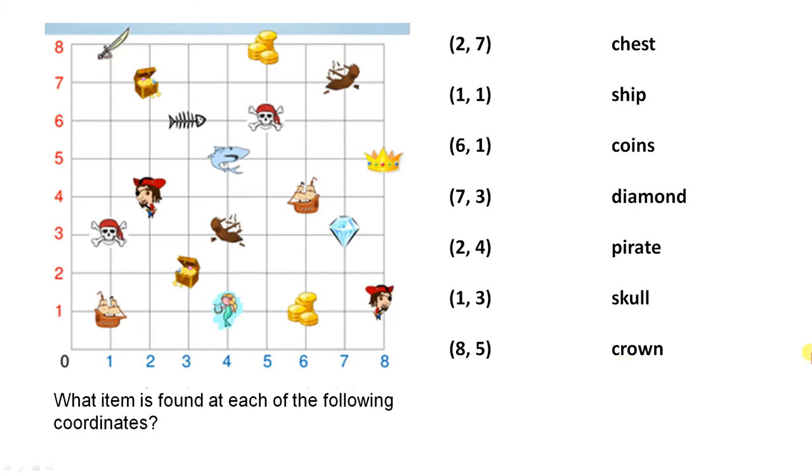So again this video has given you some excellent examples on how to locate objects on a grid. And we always use the x-axis first. Sometimes you'll have all letters, sometimes you'll have all numbers, sometimes you'll have a mixture of letters and numbers.